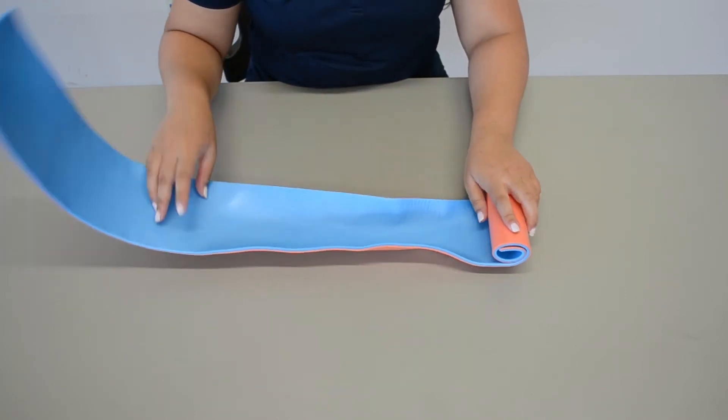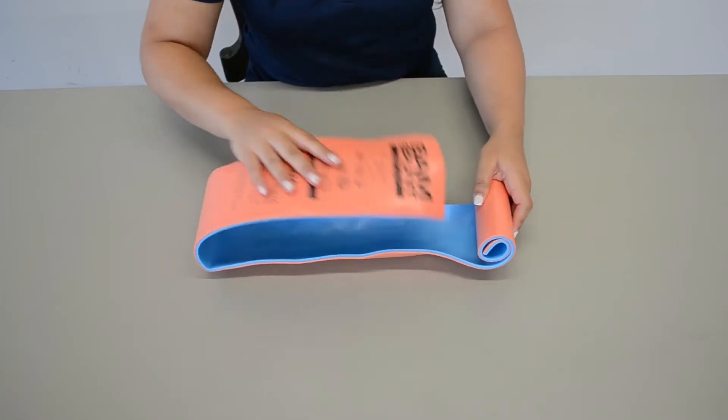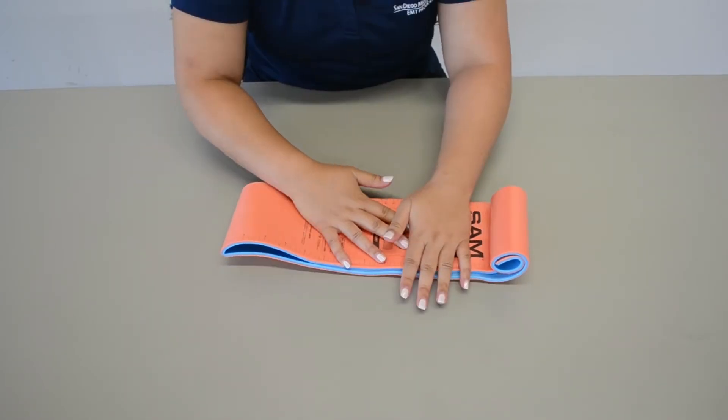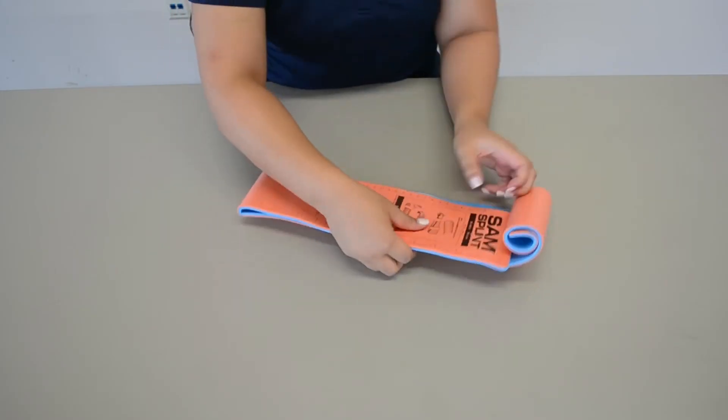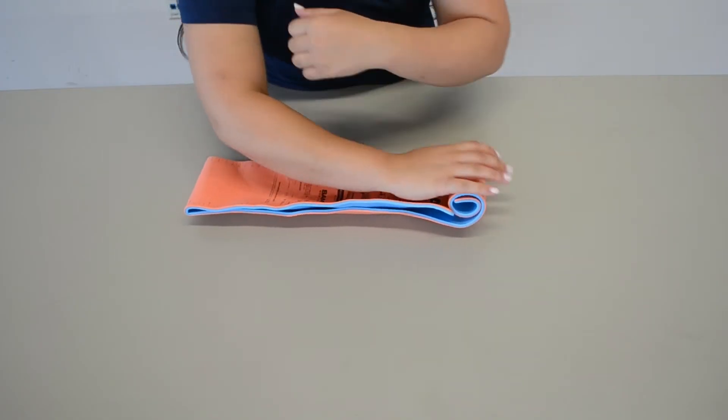The other technique is the variation of a sugar tong technique. So say you can't go over the patient's arm, you can also have this go on the bottom like that, and then again create a tunnel for the arm to go on, and so that way you can wrap.